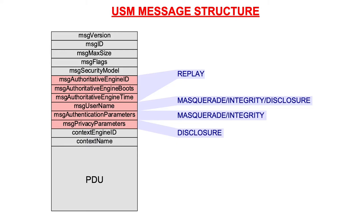Let's now focus on the parameters used by the user security model. The first three parameters — MessageAuthorativeEngineID, MessageAuthorativeEngineBoots, and MessageAuthorativeEngineTime — are used to detect replay attacks. The MessageUsername is used to protect against masquerade, integrity, and disclosure threats. For masquerade and integrity, the MessageAuthenticationParameter field is also needed, which includes the 12-octet message authentication code. For disclosure, the MessagePrivacyParameters field is needed, which contains the key needed for decryption.